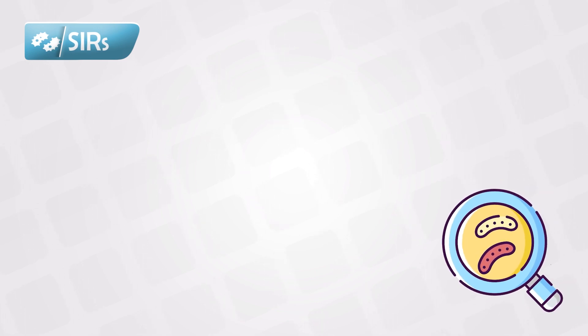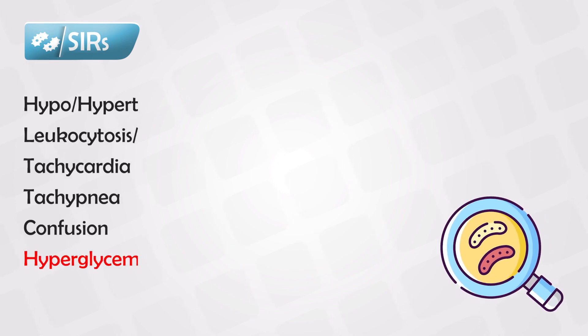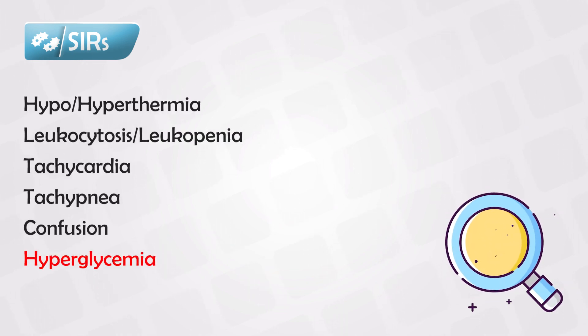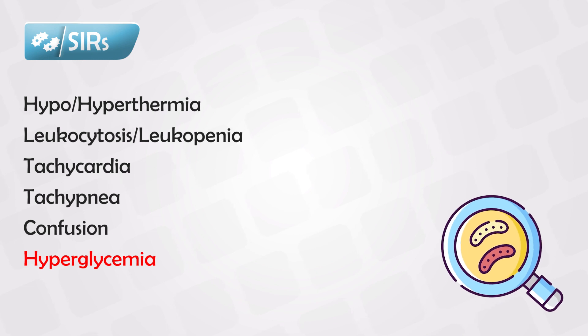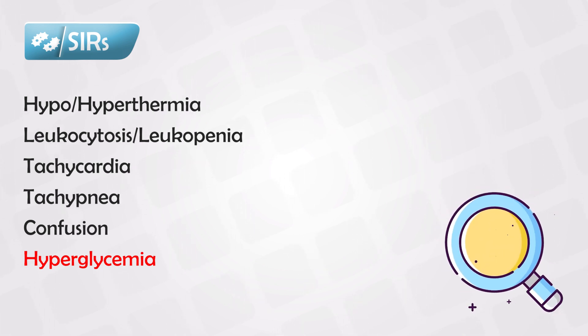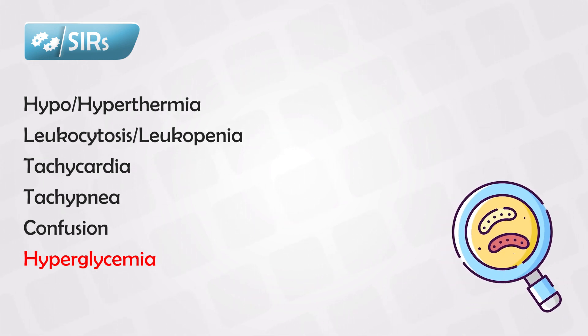Systemic inflammatory response is a reaction to sepsis, and it presents with either hypo- or hyperthermia, leukocytosis or leukopenia, tachycardia, tachypnea, confusion, and hyperglycemia.